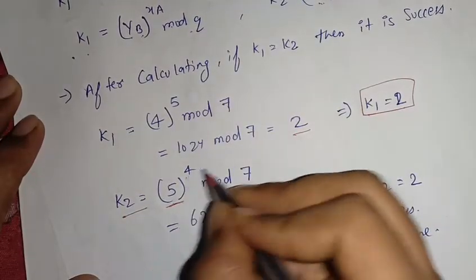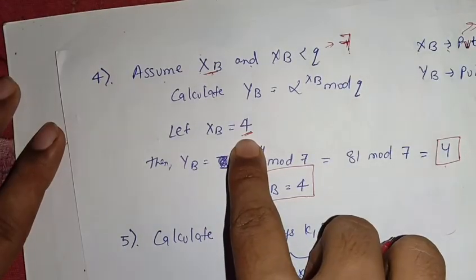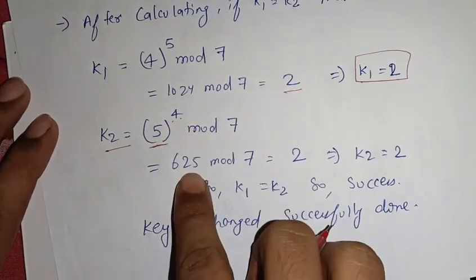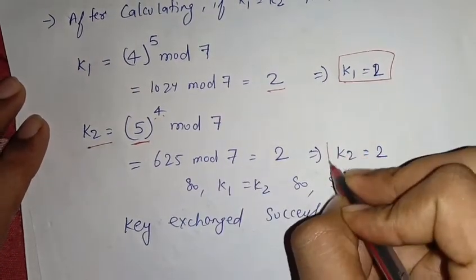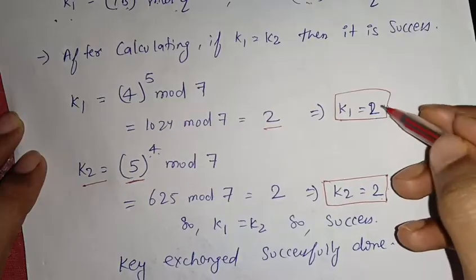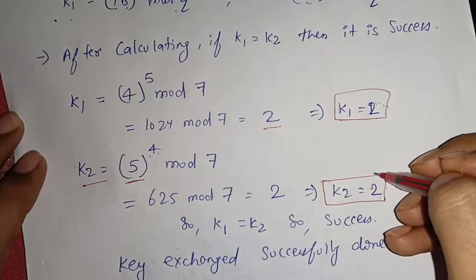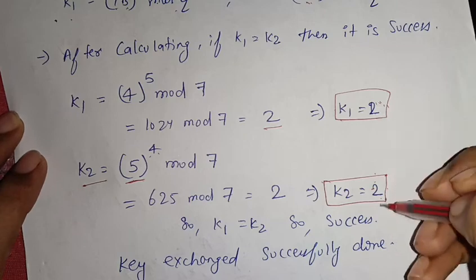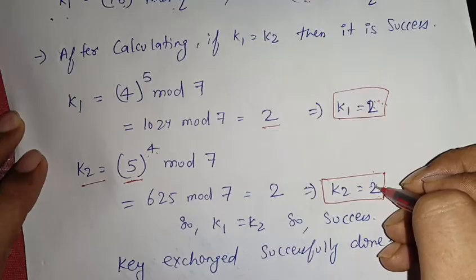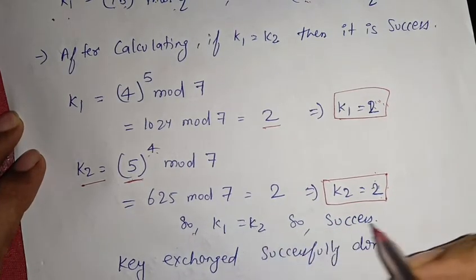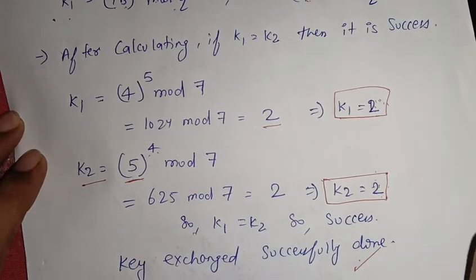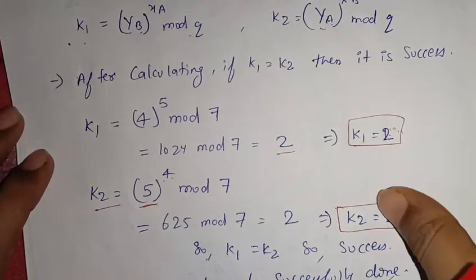For K2: YA=5, XB=4, so K2 = 5^4 mod 7 = 625 mod 7 = 2. So K2 also equals 2. Since K1 equals K2, the algorithm is successful. If K1 does not equal K2, there is an error and the key exchange has not succeeded.